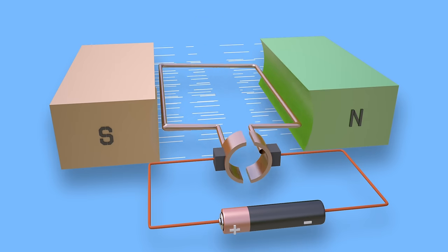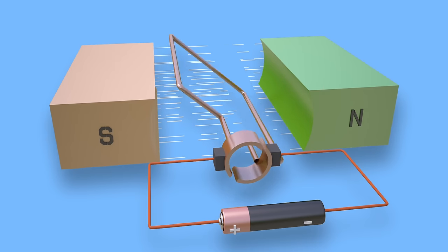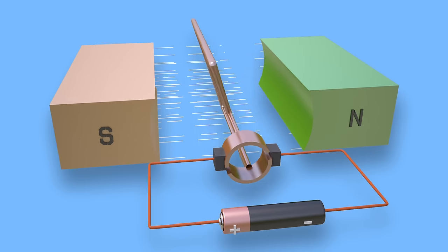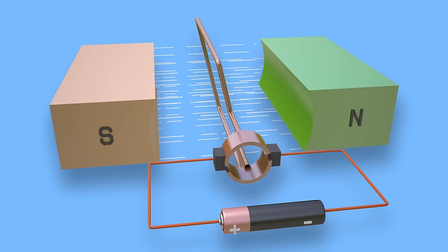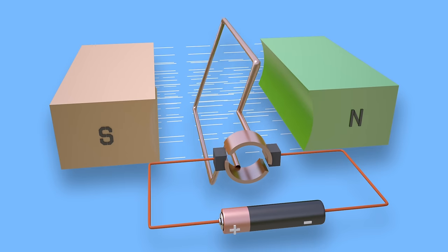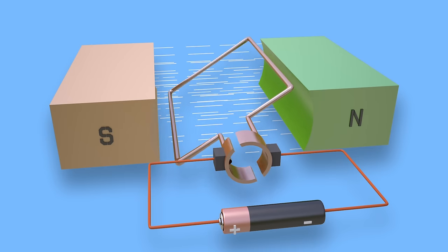Practical DC motors rotate on the same principle as this elementary model. Instead of a single turn, DC motors have many turns in the armature coil, and instead of two poles, there are a number of poles installed.